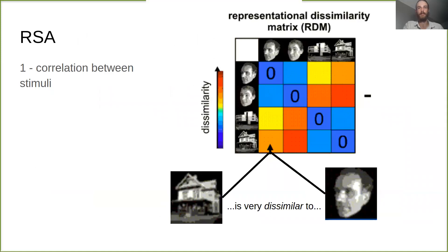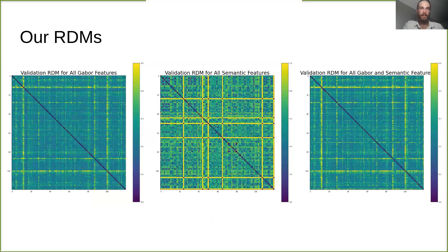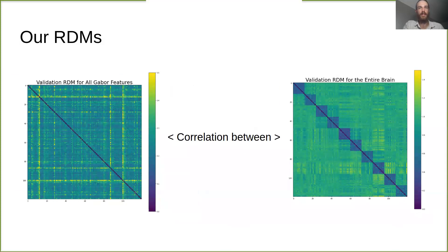In addition to our encoding models, we also applied RSA to the data. We generated an RDM based on measured brain data, and for each of the sets of features. We then computed the correlation between each of the feature RDMs and the RDM of the brain to determine the extent to which each set of features effectively captured the information represented in the brain.